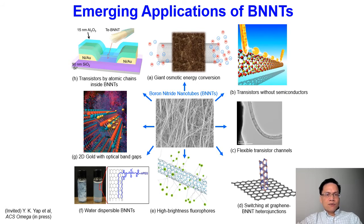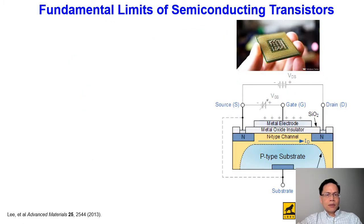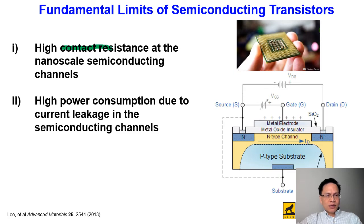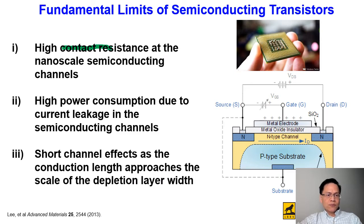Let me give you a few examples of emerging applications of boron nitride nanotubes. Let us get started with transistors without semiconductors. The motivation of this work is due to several fundamental limits of semiconductor transistors, including high contact resistance at the nanoscale semiconducting channel, high power consumption due to current leakage, as well as the short channel effect where the conduction length approaches the scale of the depletion layer width.